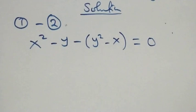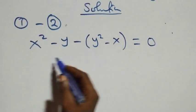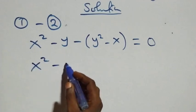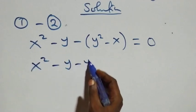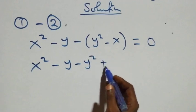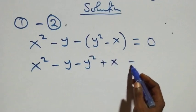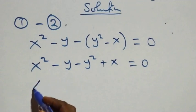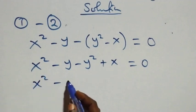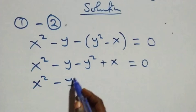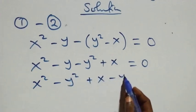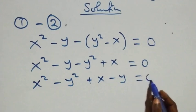Next, we open the bracket and what we have becomes x² - y - y² + x = 0. Bringing the squares together, we get x² - y² + x - y = 0.